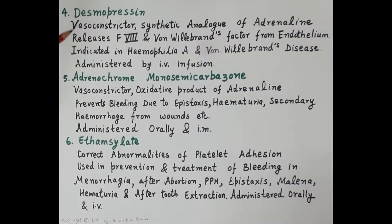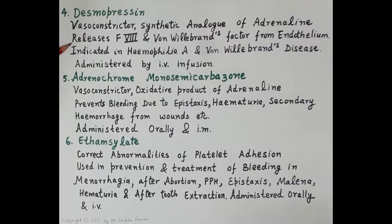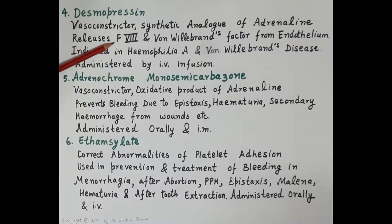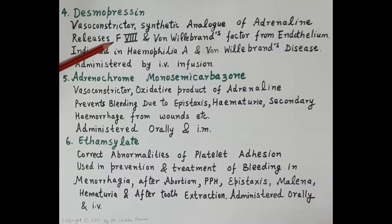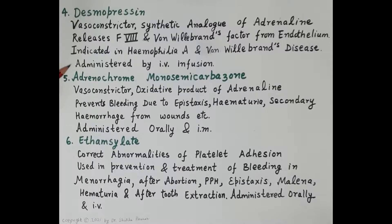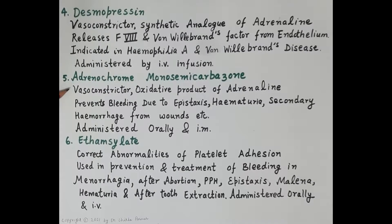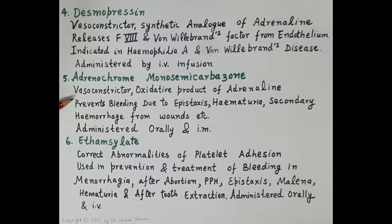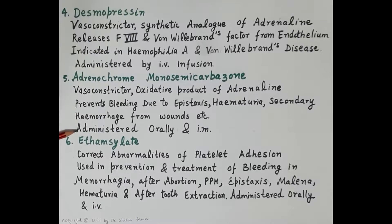Desmopressin is a systemically acting hemostatic agent and a synthetic analog of vasopressin (not adrenaline). It releases clotting factor 8 and von Willebrand factor from the endothelium. Von Willebrand factor is essential for platelet adhesion and aggregation, while clotting factor 8 is essential for the intrinsic clotting pathway. Desmopressin is indicated in hemophilia A and von Willebrand's disease, administered by IV infusion. Adrenochrome monosemicarbazone, an oxidative product of adrenaline, is a vasoconstrictor that prevents bleeding due to epistaxis, hematuria, and secondary hemorrhage; administered orally and by intramuscular route, though its efficacy is uncertain.